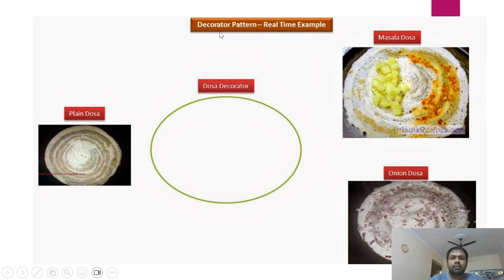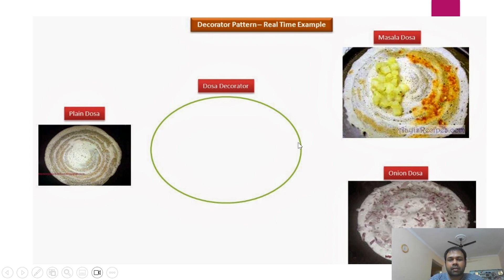Here is a real-time example for the Decorator Design Pattern. Assume there is a plain dosa. To that, we can add masala dosa, onion dosa, paneer dosa, or egg dosa. In between, we will have a decorator which helps to add extra decoration to the original. I will create one interface for plain dosa, then a decorator, and through the decorator I will add extra decorations like masala or onion.